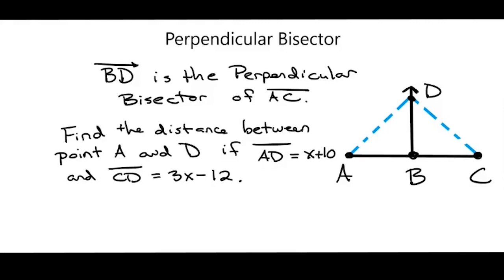Here I'm told to find the distance between point A and point D. So I need to find that distance. The way I do that is I know that AD is x plus 10, and I know that CD is 3x minus 12. I also know that those two segments are the same length, so I can set them equal to each other. So I have x plus 10 equals 3x minus 12.